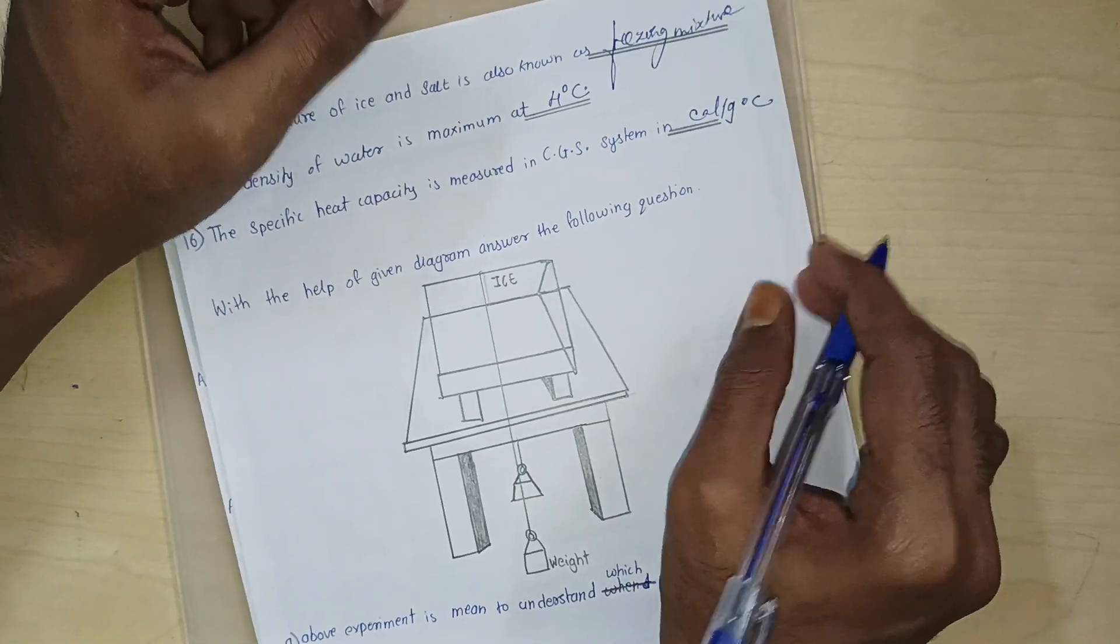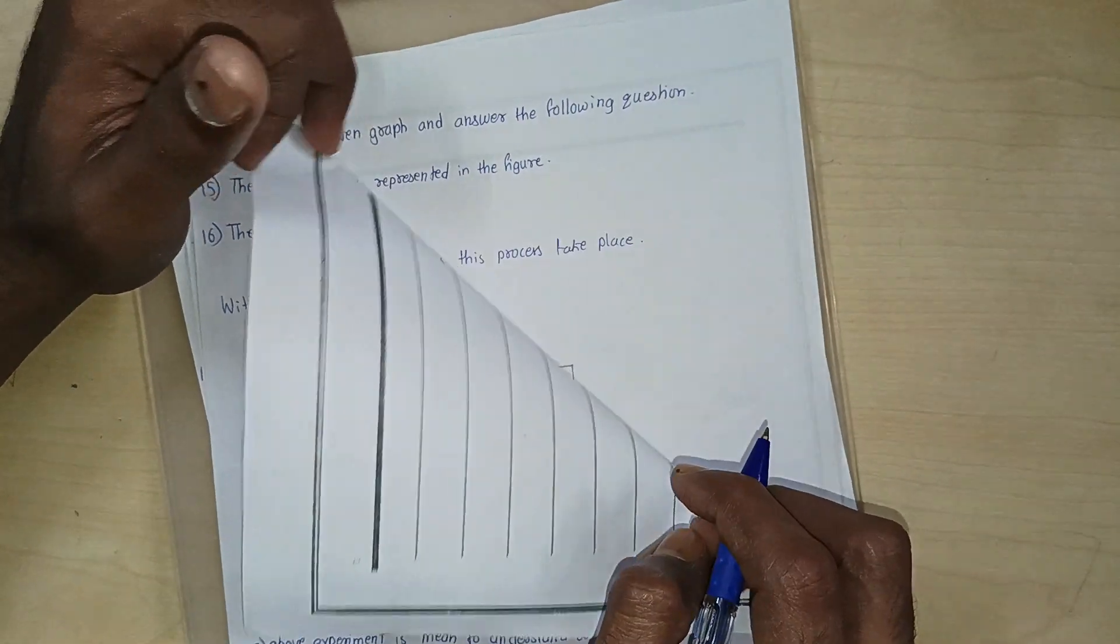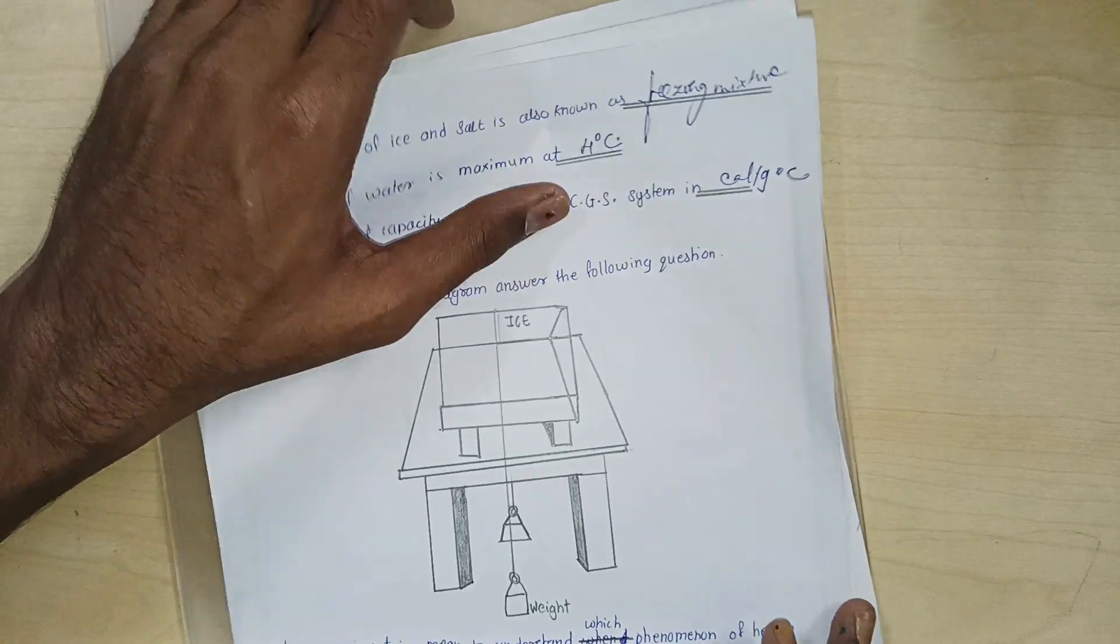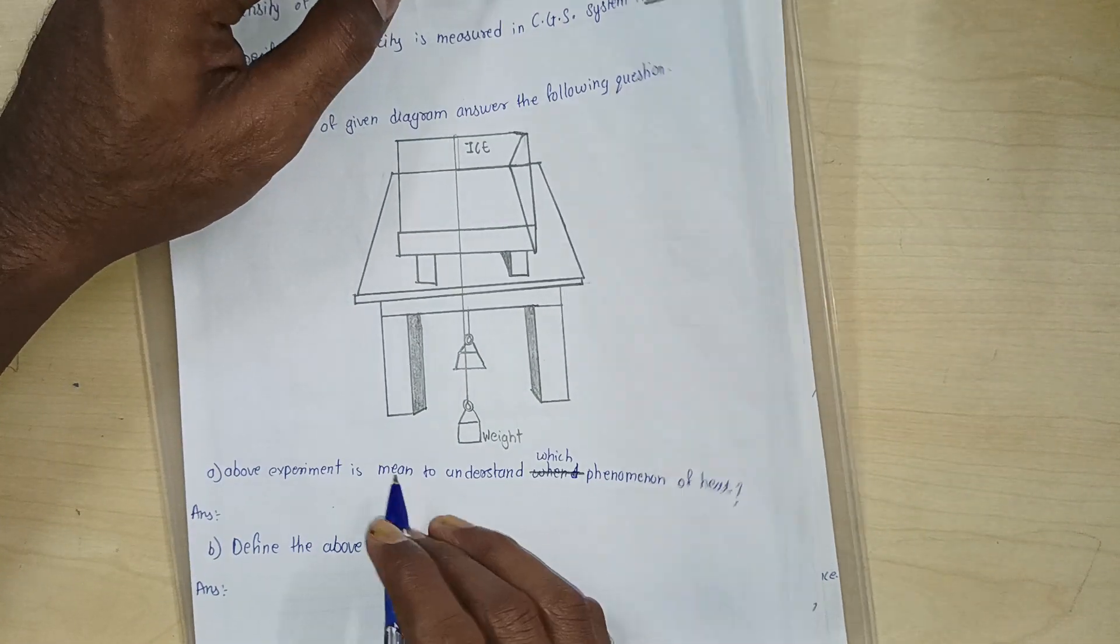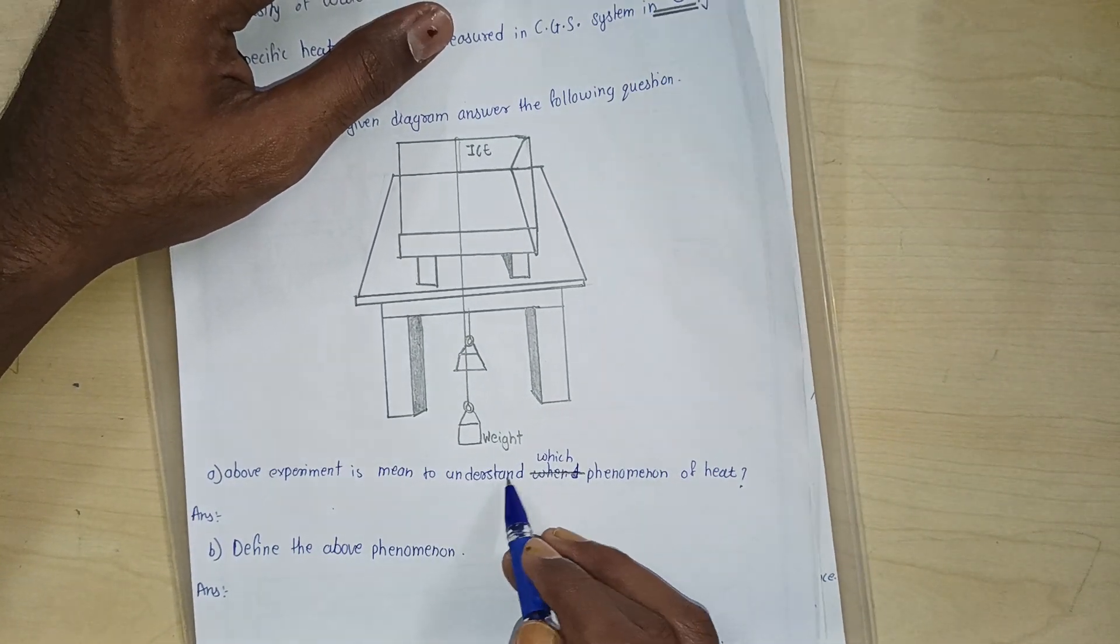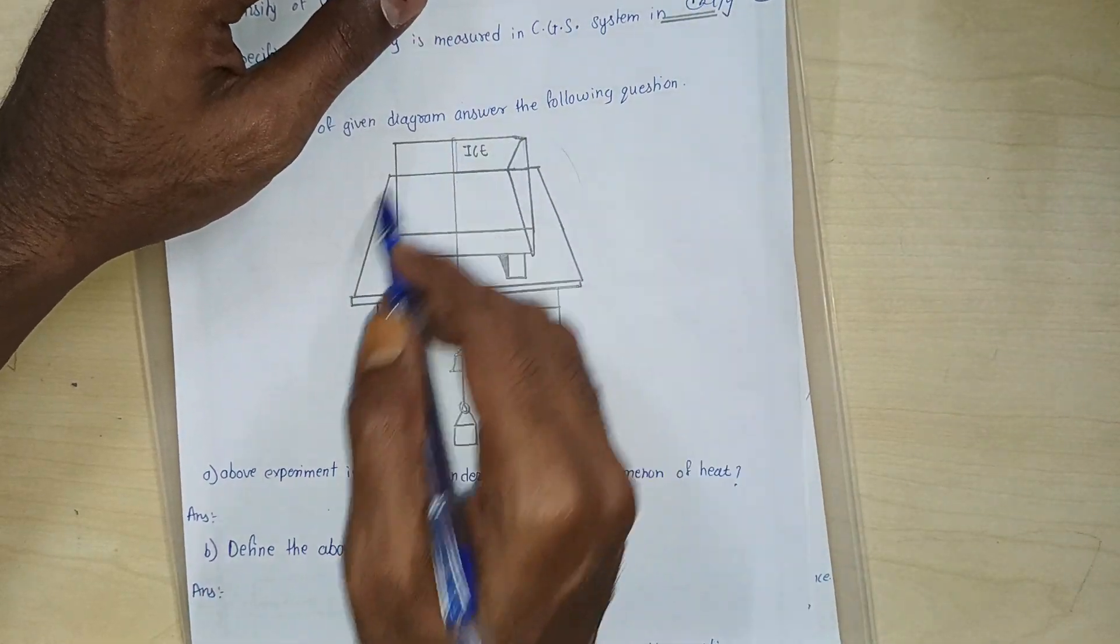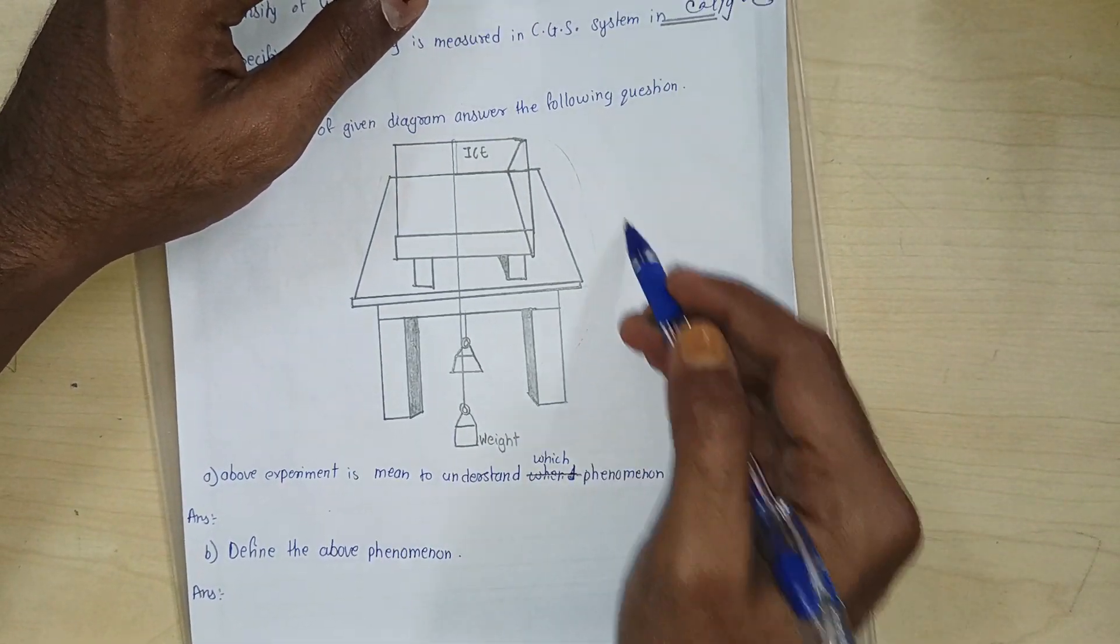Now with the help of the given diagram you have to answer the following question. Above experiment is meant to understand which phenomenon? What does it look like? What is it going to happen? Regelation.